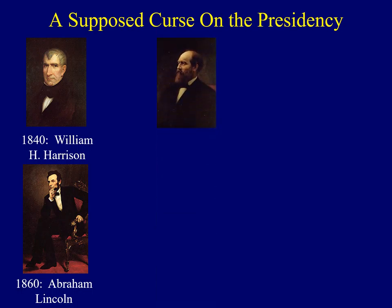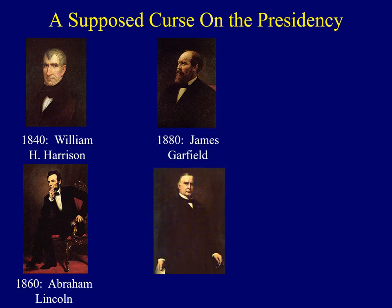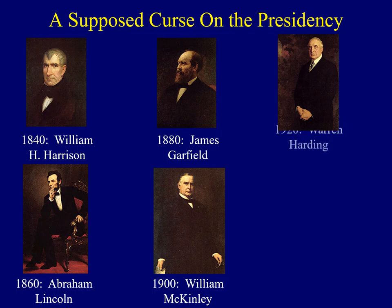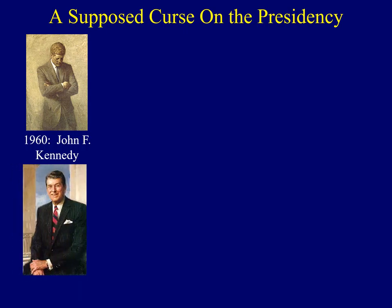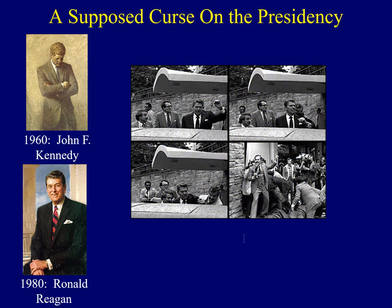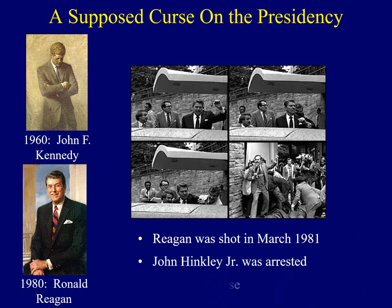In 1860, Abraham Lincoln was assassinated by John Wilkes Booth. In 1880, James Garfield was assassinated. In 1900, William McKinley was assassinated. In 1920, Warren Harding suffered a heart attack and died. In 1940, Franklin Roosevelt had a brain aneurysm and died. The curse continued until 1960, when John F. Kennedy was assassinated. In 1980, Ronald Reagan was shot a couple of months into his presidency in March 1981, and his would-be assassin John Hinckley Jr. was arrested. This ended the so-called curse on the presidency.